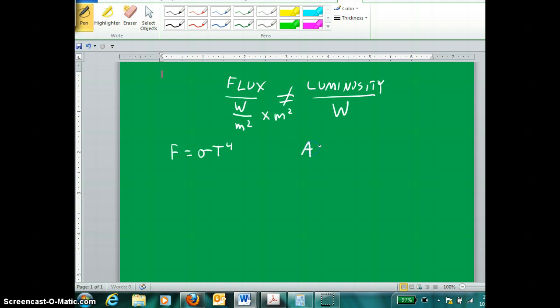Now, the surface area of any spherical object, including a star, is calculated by 4 pi radius squared. Now, if we just want to multiply surface area by flux to get luminosity, that means if this is surface area and that's flux, this becomes luminosity when we have 4 pi r squared times sigma times T to the fourth.